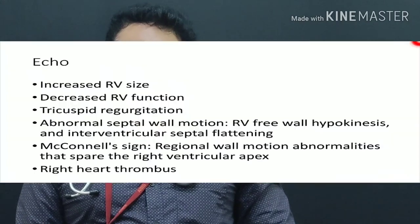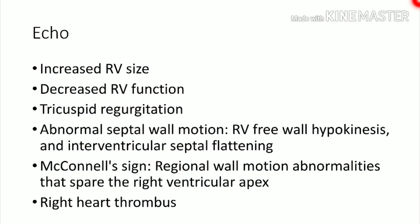Echocardiography has a role in acute pulmonary embolism. In massive PE, echo can show RV enlargement, reduced RV function, and tricuspid regurgitation. McConnell's sign — regional wall motion abnormality at the right ventricular apex — is a classical echo finding, though not seen in all cases. Right heart thrombus can also be visualized in patients with DVT propagating to the lungs.